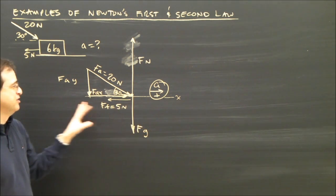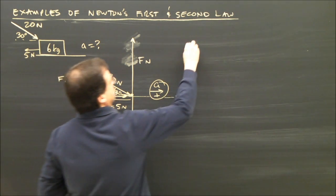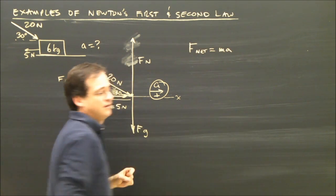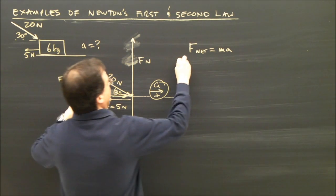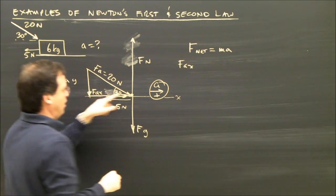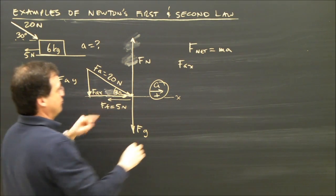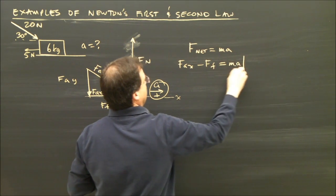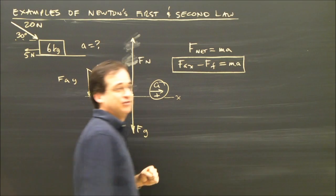We need the equation that governs this. In the x direction, that's the one I'm interested in because that's where I can find the acceleration. In the x direction, I have Fax positive to the right and force of friction to the left equals ma. So there's the equation that governs it.